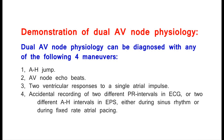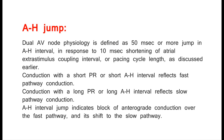Demonstration of dual AV node physiology. Dual AV node physiology can be diagnosed with any of the following four maneuvers: 1. AH-Jump. 2. AV node echo beats. 3. Two ventricular responses to a single atrial impulse. 4. Accidental recording of two different PR intervals in ECG, or two different AH intervals in EPS, either during sinus rhythm or during fixed-rate atrial pacing.